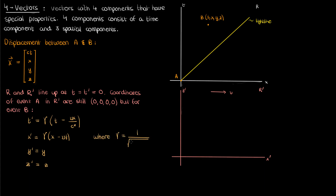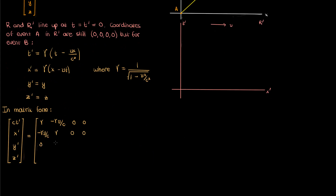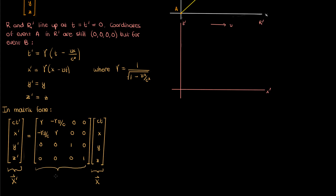Note that gamma here is called the Lorentz factor and is given by the following. Now if we want to write these Lorentz transformation equations in terms of vectors and matrices, we can just collect the primed coordinates into a column vector, and set that equal to this matrix times the unprimed coordinates in a column vector. This vector on the left is just the displacement vector X but in the primed reference frame, and this column vector on the right is just our unprimed displacement vector X. This 4x4 matrix that connects the unprimed displacement vector to the primed displacement vector is called the Lorentz transformation matrix, denoted by capital lambda. So overall, the prime displacement vector can be calculated from the unprimed displacement vector by using the Lorentz transformation matrix lambda. I'm going to call this equation 1.